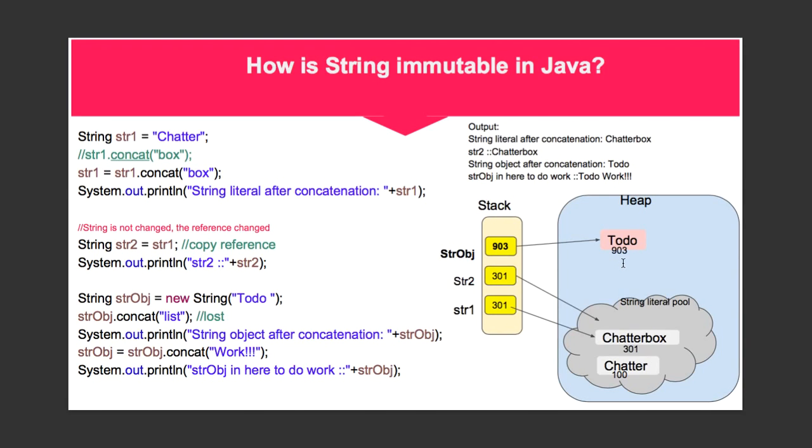Now we can see the string object str obj is now pointing to string object Todo which is at the address 903, so it is referencing the same address. Just like the previous example for string literal, we are now concatenating the string List with the string Todo.